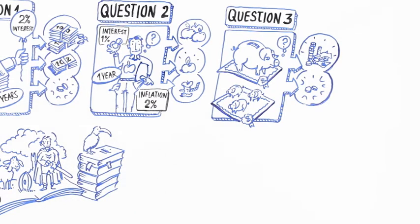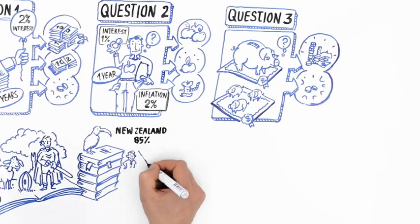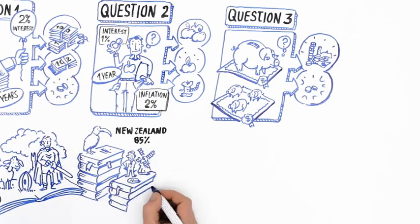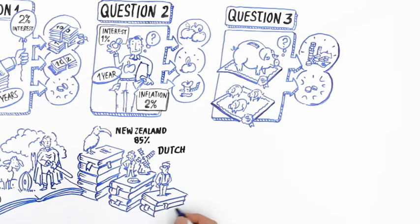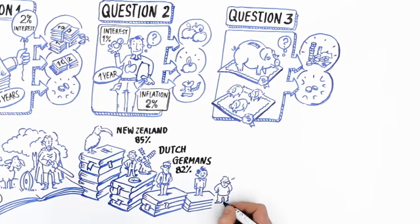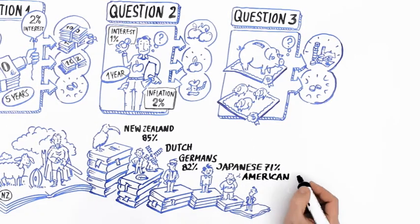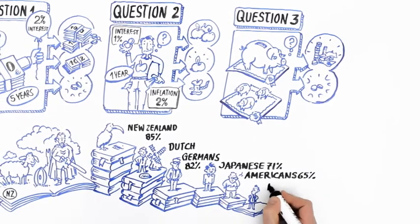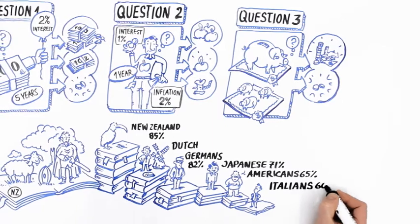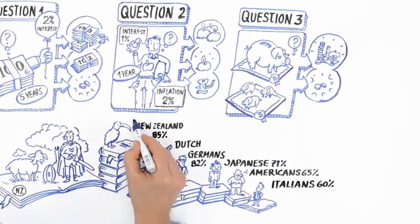Some 85% got the right answer for compound interest, beating the Dutch. By comparison, 82% of the Germans, 71% of Japanese, 65% of Americans, and only 60% of Italians got it correct.